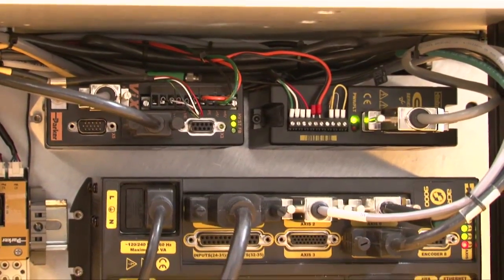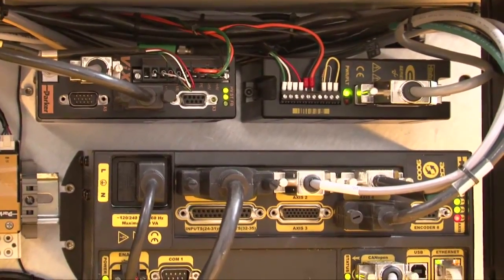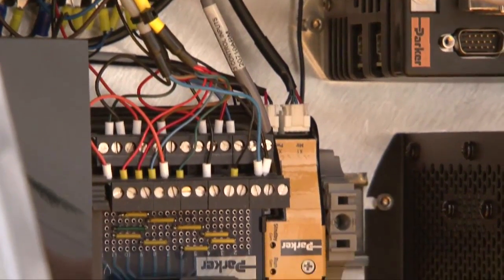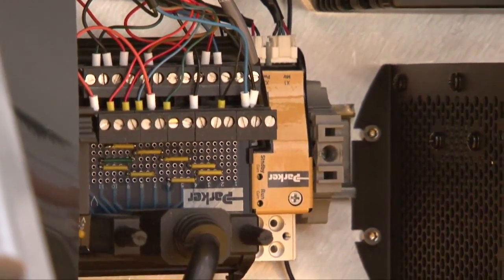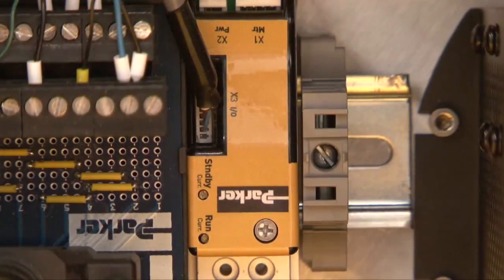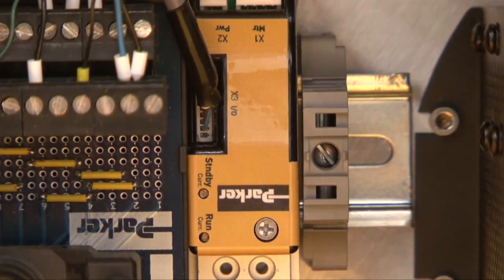Next we go to the amplifiers in the system. We have a couple different ones: a servo amplifier for the servo linear motor here, and then we have some stepper drives. The one I want to point out though is the ION drive. It was designed for the life science market. It's 1 inch by 1 inch by 3 inches deep—very compact design, designed specifically for this industry.